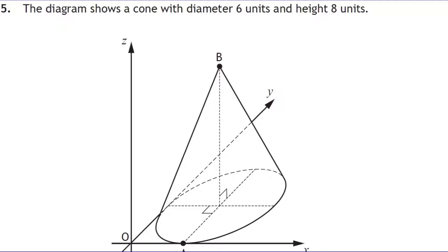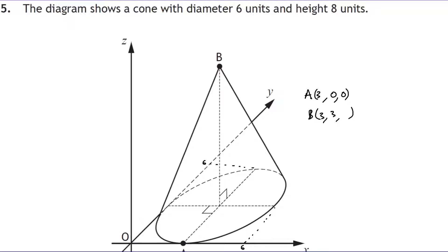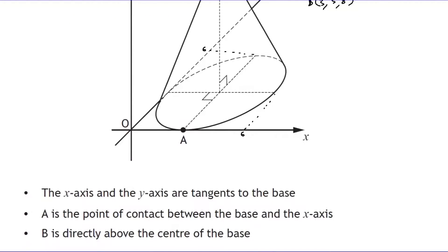The diameter is six, so the radius is three. For coordinate A: three along the x-axis, zero back, zero up — so (3, 0, 0). For coordinate B, we go three along and three back to reach the centre, then the full height of eight up — so (3, 3, 8). That's your two marks.